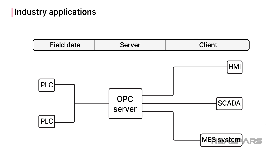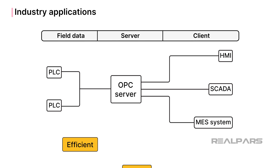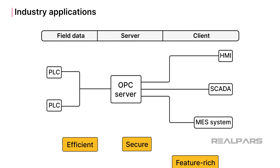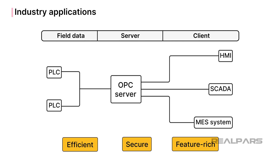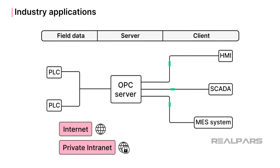OPC UA is an efficient, secure, and feature-rich protocol for accessing data from a wide variety of devices running various operating systems in various locations. A manufacturing company can use OPC UA to collect and store data from various plant sites in different locations, connected by the internet or private intranet.